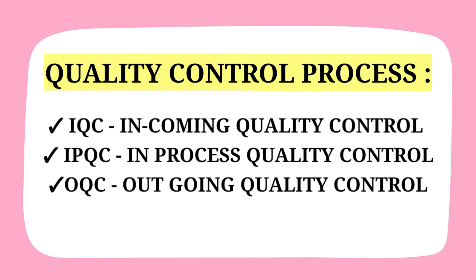There are three types of processes in quality control: incoming quality control for raw materials and packaging materials, in-process quality control of manufacturing materials, and outgoing quality control of finished or final products.